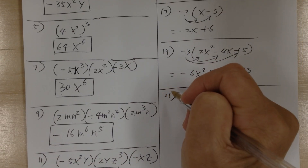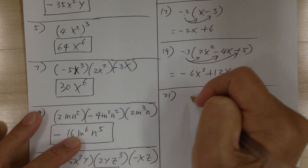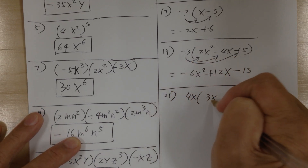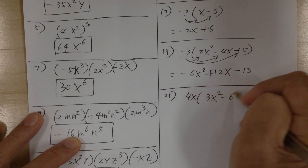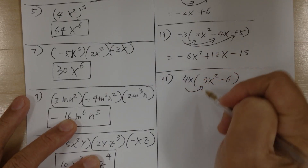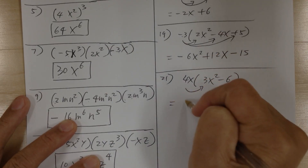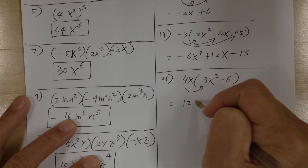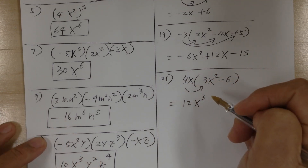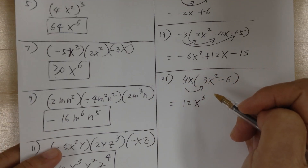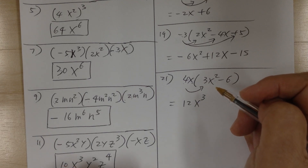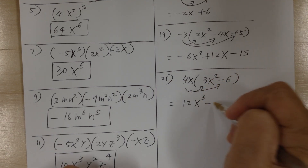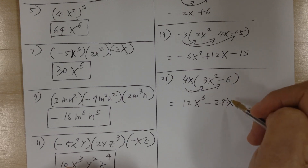Number 21. You have 4x times (3x squared minus 6). Distribute: 4 times 3 is 12, and x times x squared is x to the 3, so 12x to the 3. After that, multiply: 4x times negative 6 gives minus 24x.